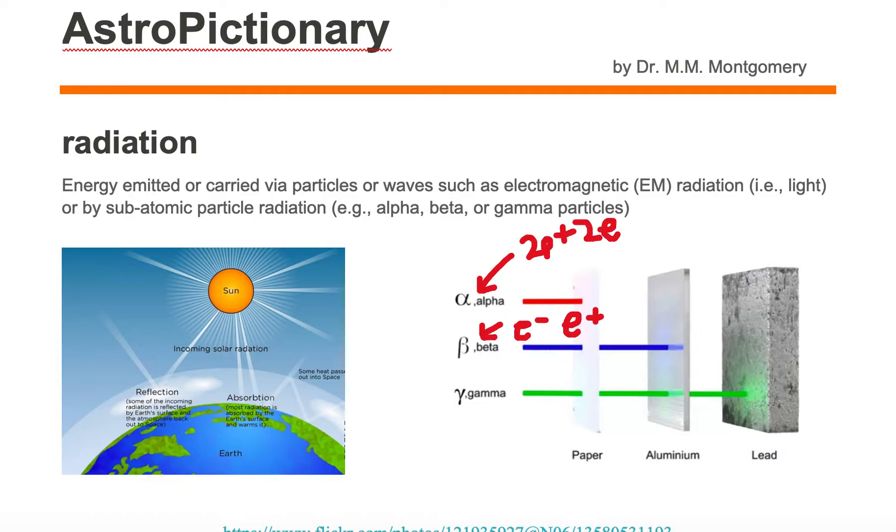Radiation is energy emitted or carried via particles or waves such as electromagnetic (EM) radiation, i.e. light, or by subatomic particle radiation such as alpha, beta, or gamma particles.